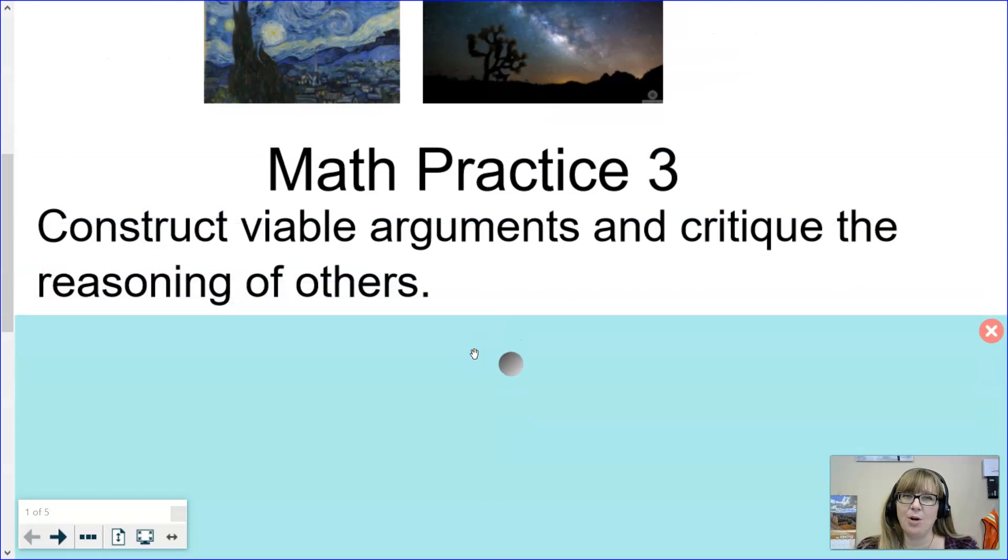Math practice three is to construct viable arguments and critique the reasoning of others. Again this is a two-parter. Constructing viable arguments means we're showing our work or explaining or justifying all of the things that we know and say because that's what good mathematicians do. The second part is to critique the reasoning of others. We need to have the skill of looking at others' work or listening to what others say, evaluating their reasons and proofs, and we can either learn from them or teach them.